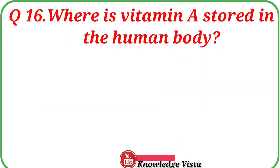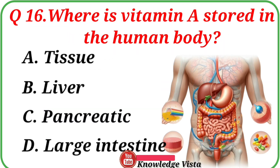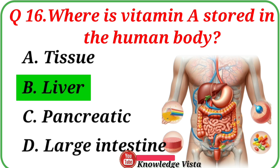Question No. 16: Where is vitamin A stored in the human body? Your options are: A. Tissue, B. Liver, C. Pancreatic, D. Large Intestine. Correct answer is Option B, Liver.